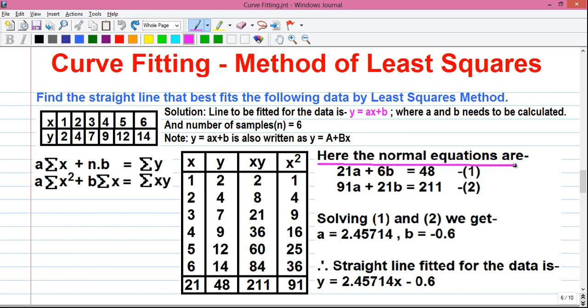So here, the normal equations are: first is a into sum of x. So the sum of all x values is 21, so that is 21a. Next is n into b. n is 6, so that is plus 6b equals to sum of y. So sum of all y values is 48. So that equals 48, written here. And this is our equation number 1.